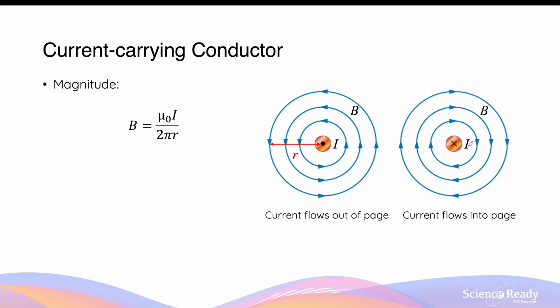In the example on the right-hand side, we point our thumb into the screen in the direction of the conventional current, and when we curl our fingers to form a fist, it runs in a clockwise direction, indicating that's the direction of the magnetic field.